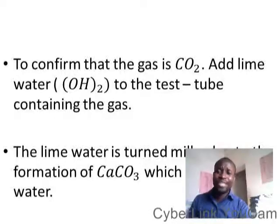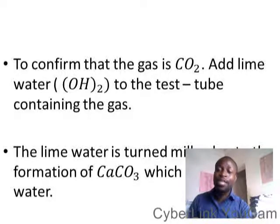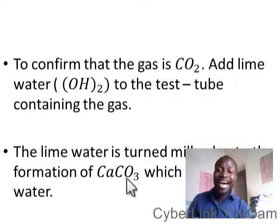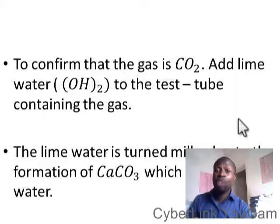So, the lime water will be turned milky. Lime water is calcium hydroxide. When calcium hydroxide combines with carbon dioxide, it gives you H₂O and CaCO₃. The color of CaCO₃ is milky white, and it is insoluble in water. Learn this, and don't hesitate to subscribe and watch the next video for comprehensive information.